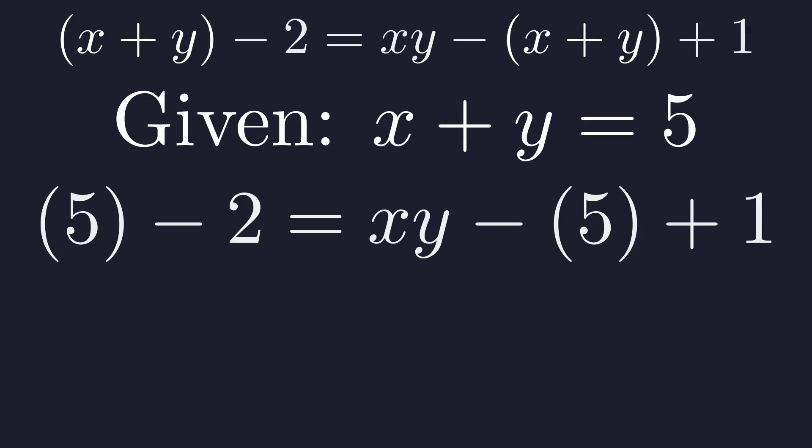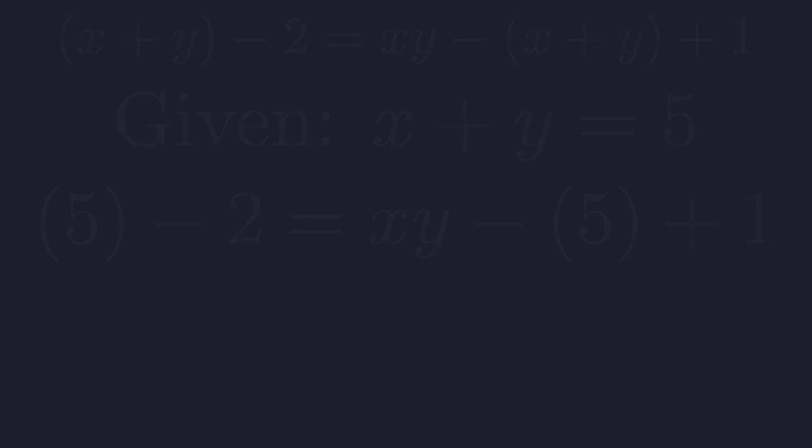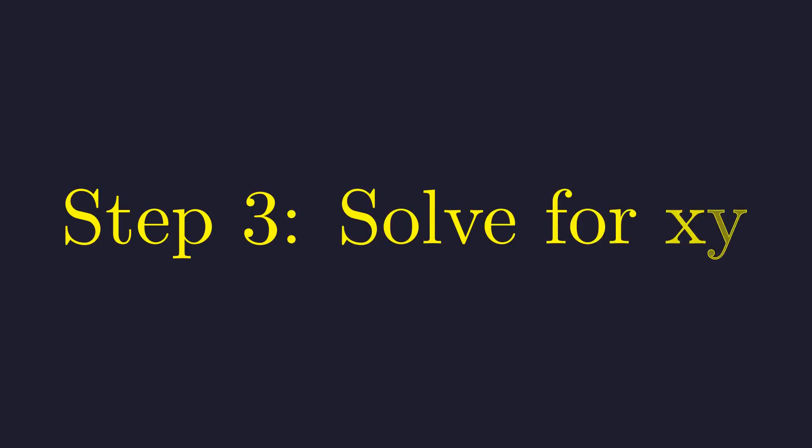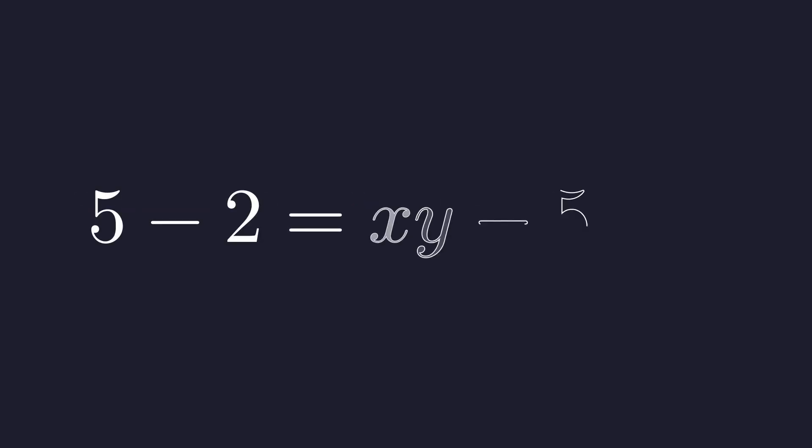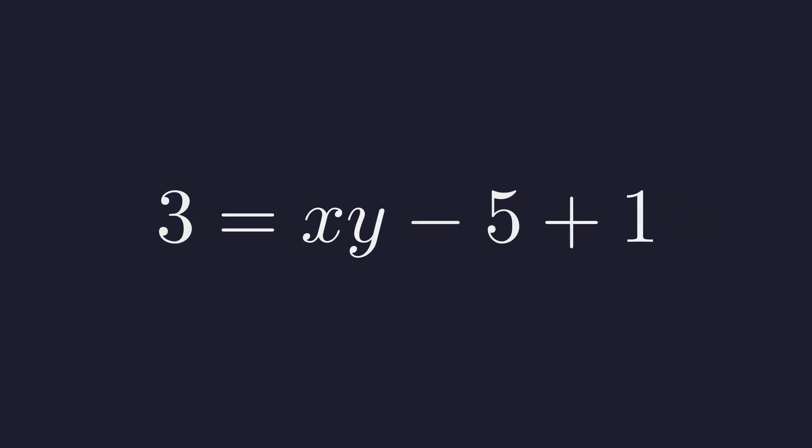After substituting, the equation becomes much simpler. 5 minus 2 equals x times y minus 5 plus 1. Now it's just simple arithmetic to find the product. Let's work through the arithmetic, one side at a time. First, we evaluate the left side of the equation. On the left, 5 minus 2 gives us 3.